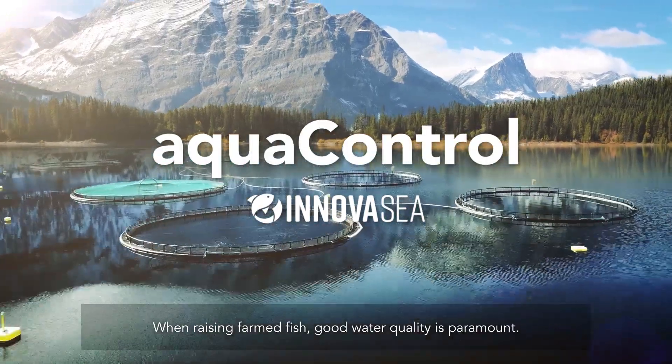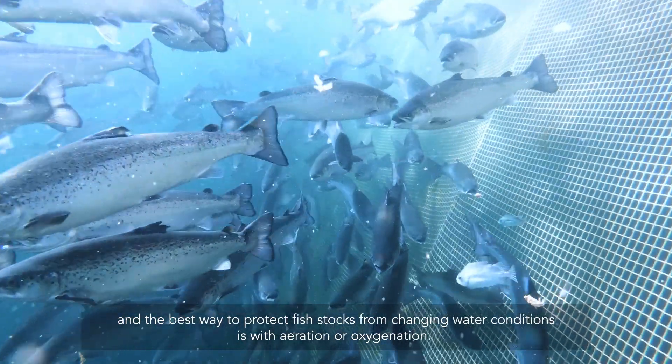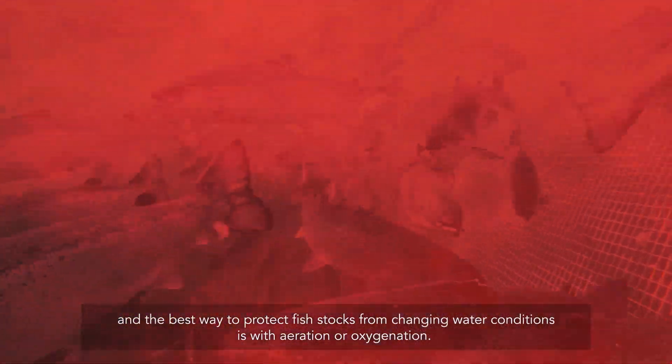When raising farmed fish, good water quality is paramount. And the best way to protect fish stocks from changing water conditions is with aeration or oxygenation.